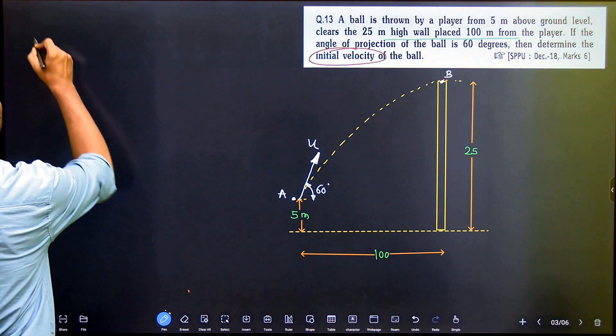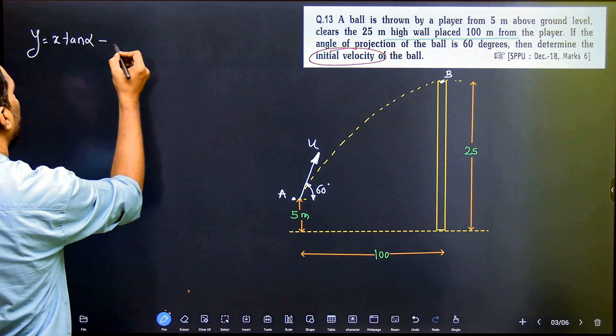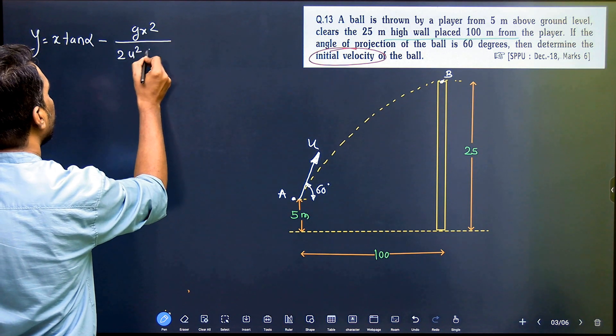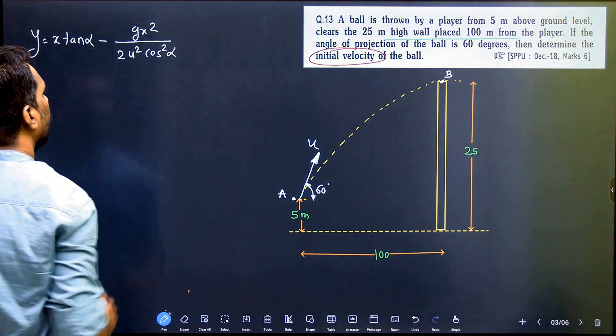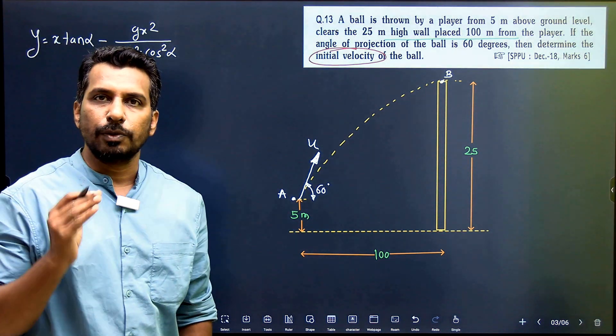The formula is Y is equal to X tan alpha minus G x square upon 2 u square cos square alpha. This is the formula that we had and we have solved two questions.